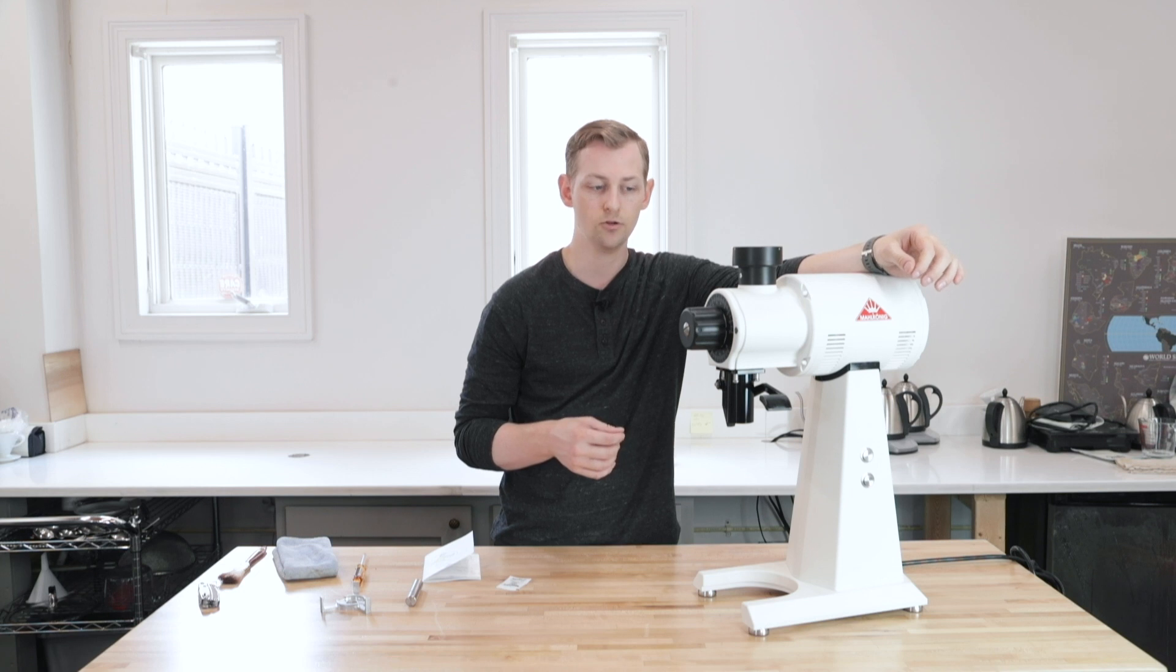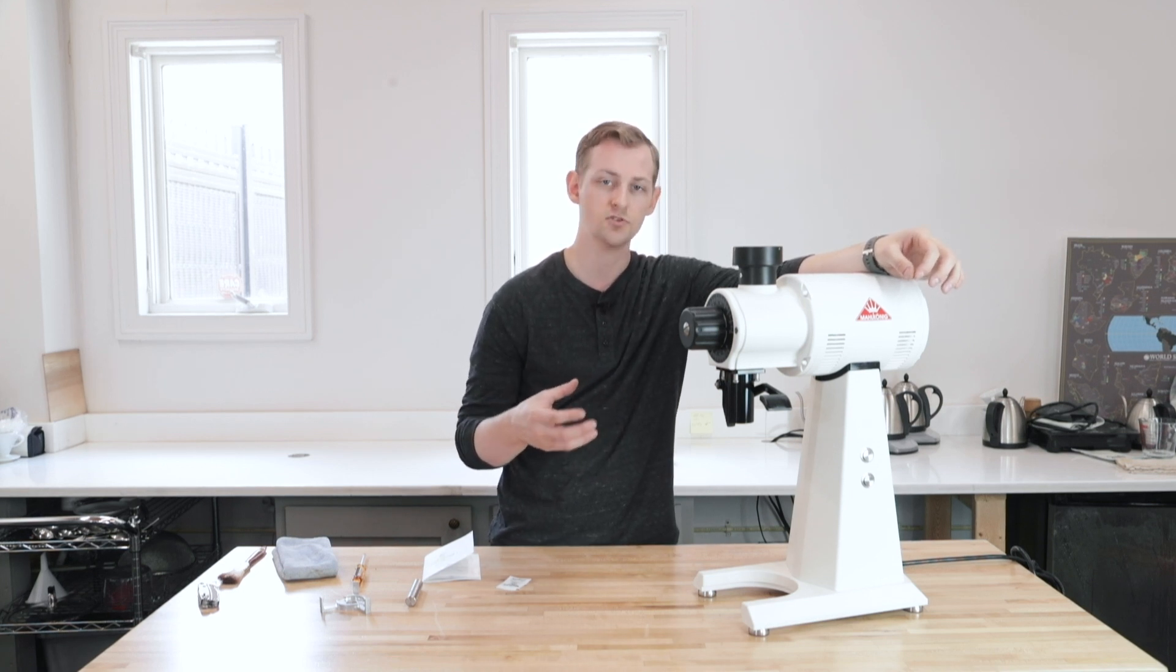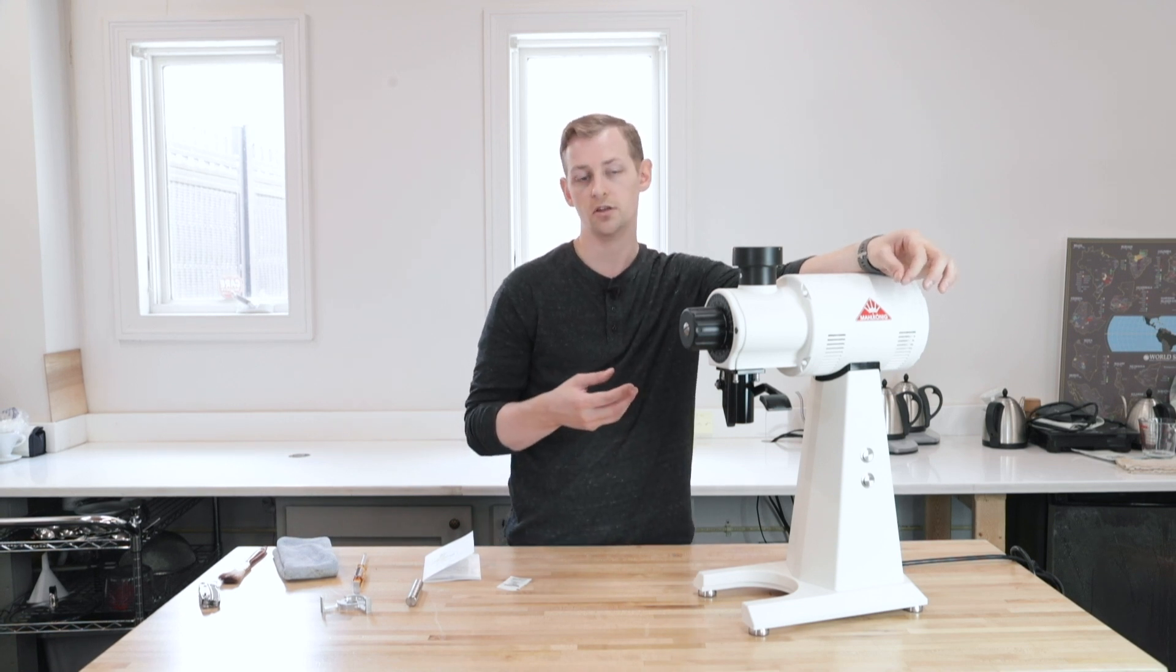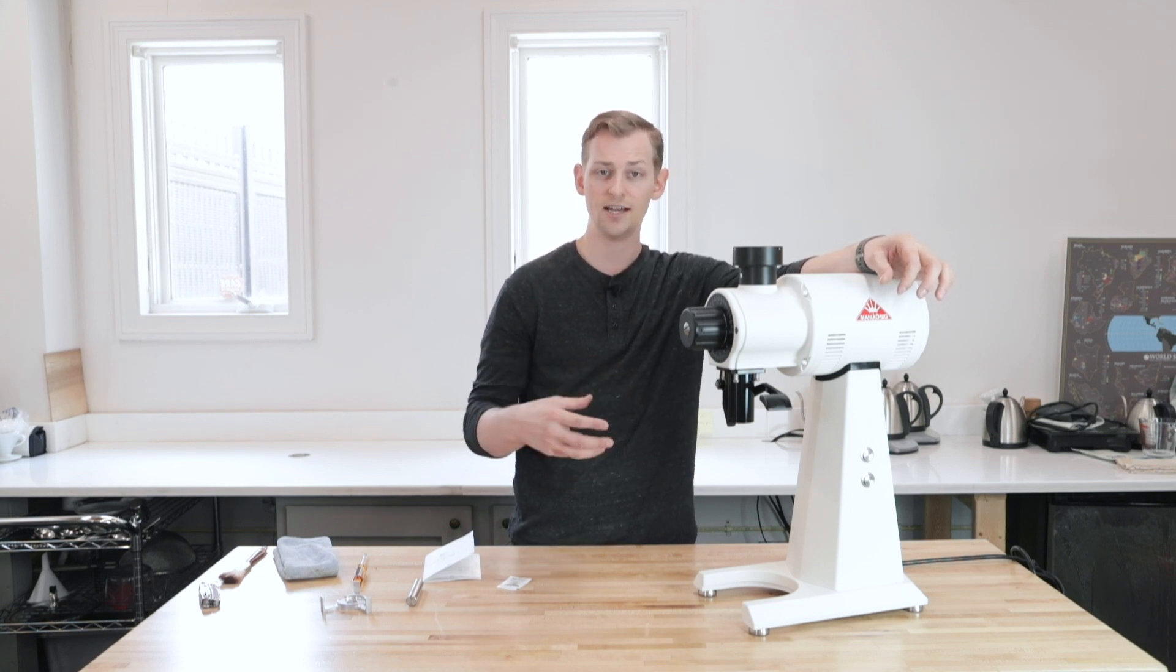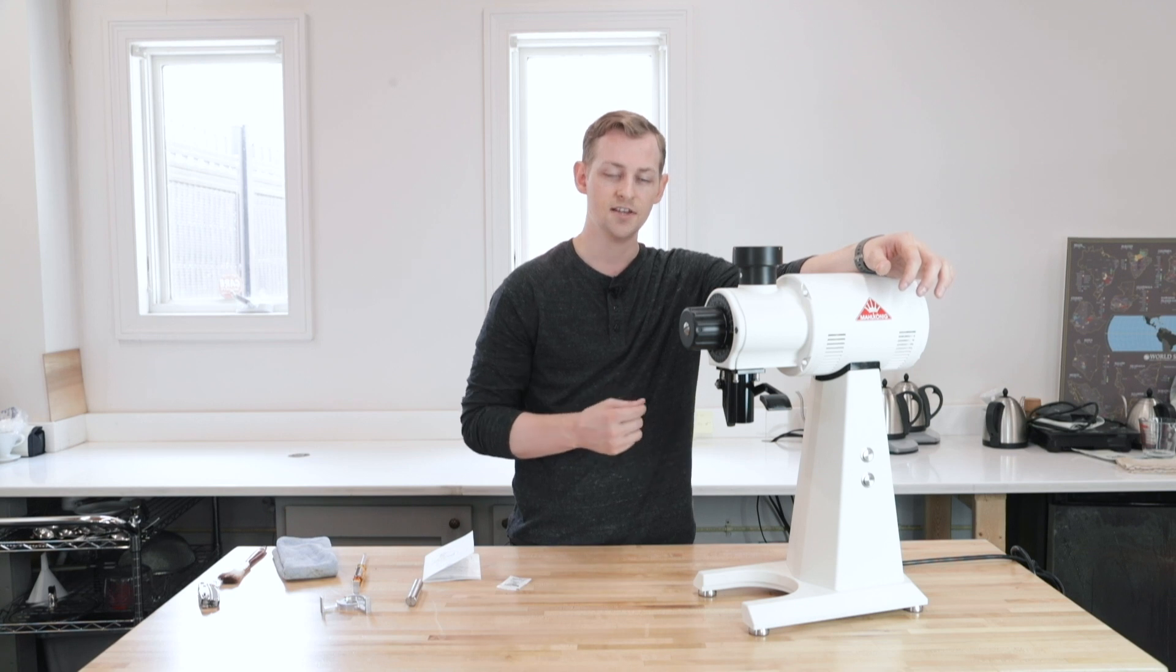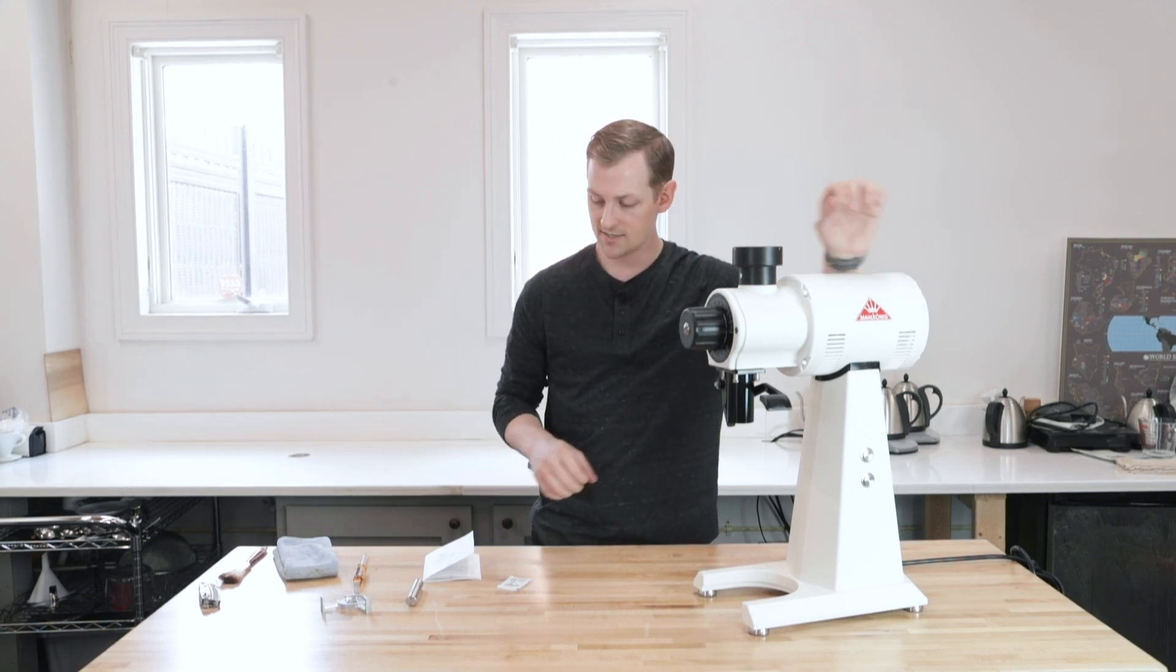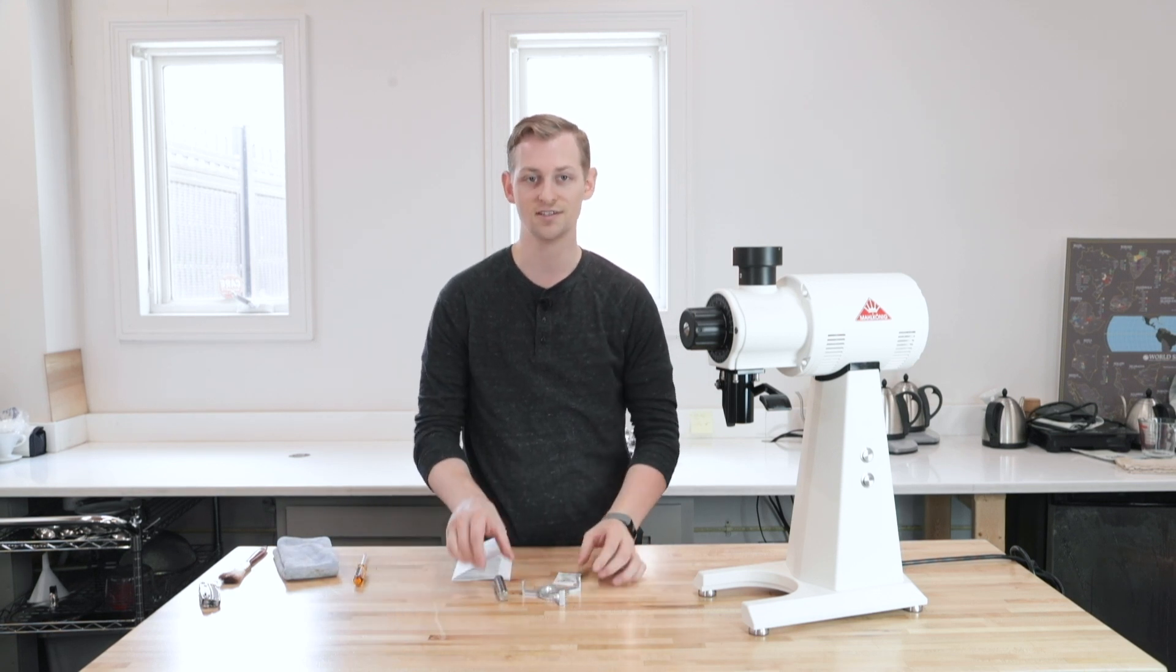Radial alignment is typically most often needed when you are replacing burrs or servicing the grinder in such a way that you have removed the burrs to get under them and clean them. It's just a good way to make sure that you are aligning everything so your grinder is set up to grind perfectly once it's back and assembled. So that is the Malkoenig Burr Alignment Kit for the EK43 series. Thanks for watching.